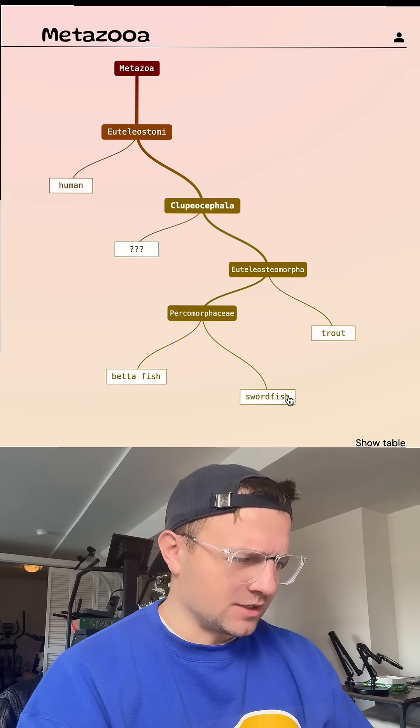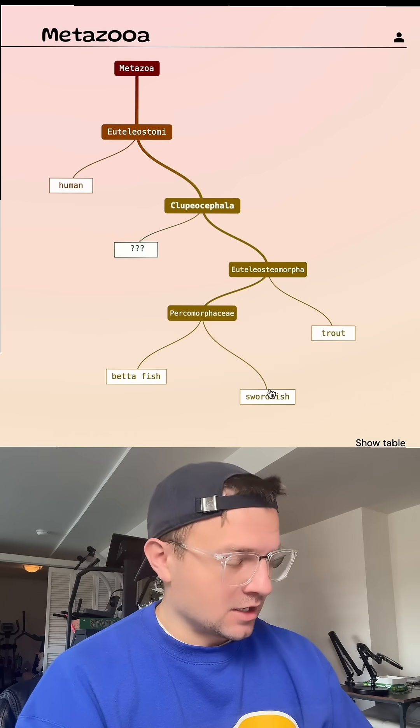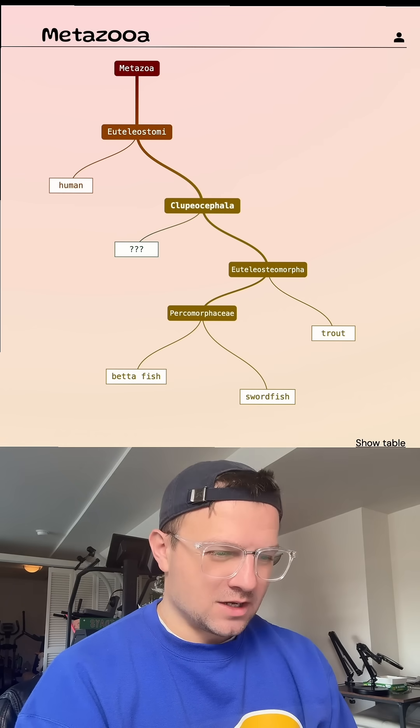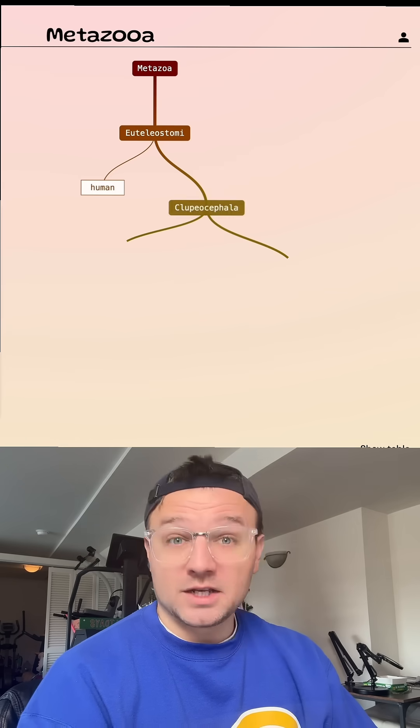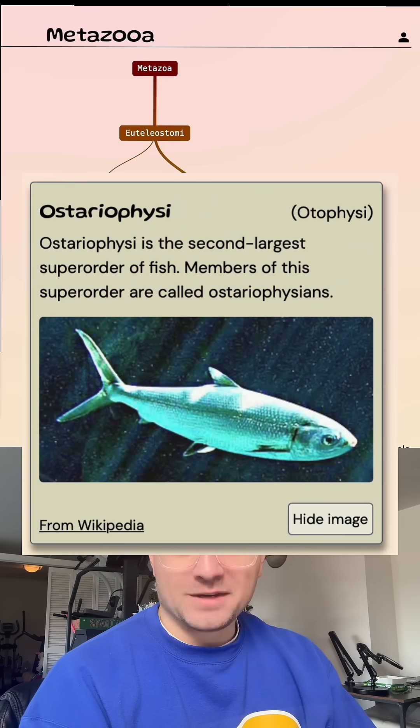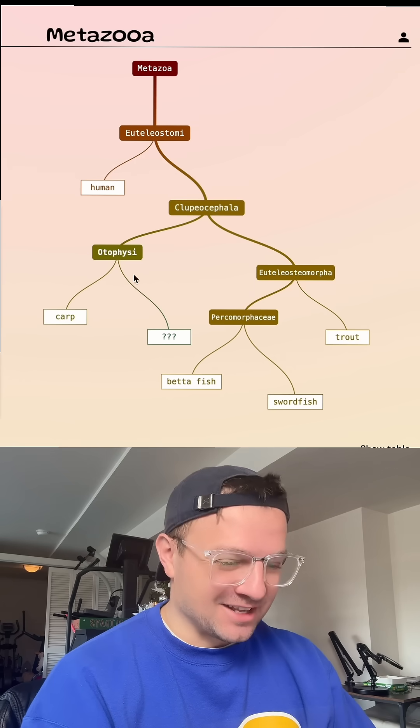Wow, swordfish is further down here. That's interesting. I thought it'd been further back. Okay, so that doesn't help us. Minnow's not here. Let's try carp. Let's see where carp puts us. Okay, we did get a smaller grouping. Very good. But that doesn't really help me because I don't know what this smaller grouping really tells us.